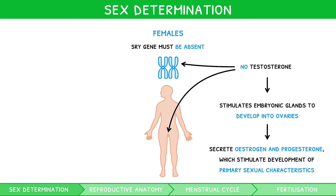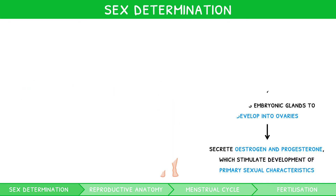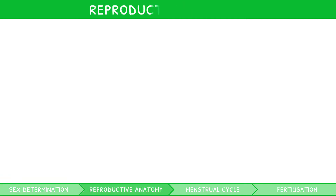In addition, at puberty, estrogen and progesterone promote female secondary sexual characteristics. These include enlargement of breasts, and growth of pubic and underarm hair. Now that you know how sex determination occurs, you must ensure you can identify and outline the function of the reproductive structures present in males and females. You must be comfortable doing so from a front-on and side-on view.